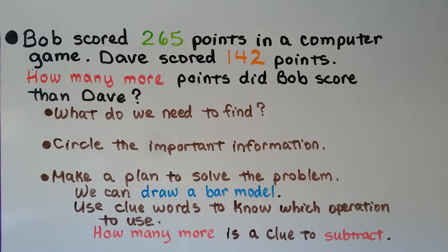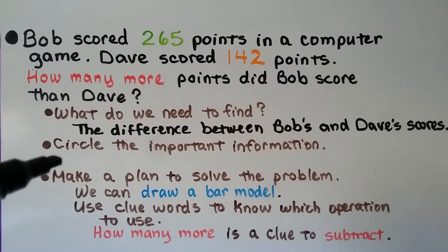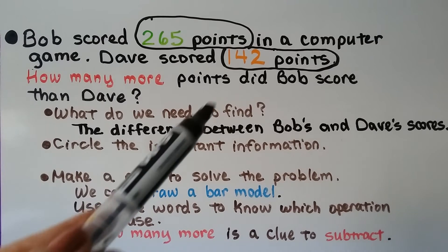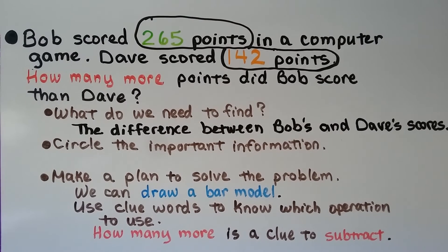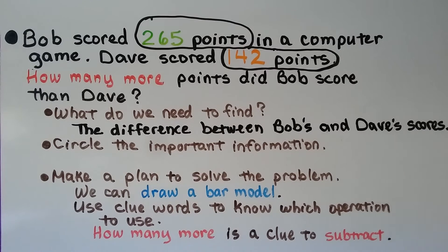Bob scored 265 points in a computer game. Dave scored 142 points. How many more points did Bob score than Dave? We ask ourselves what do we need to find — we need to find the difference between Bob and Dave's scores. We circle the important information: Bob scored 265 points, Dave scored 142 points. We make a plan to solve the problem. We can draw a bar model and use clue words to know which operation to use. 'How many more' is a clue to subtract.